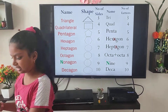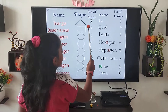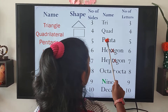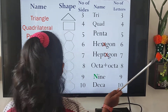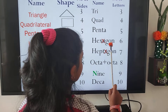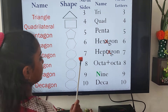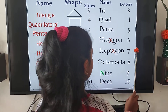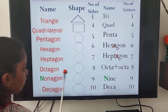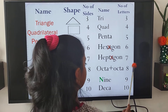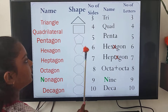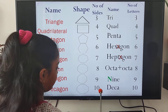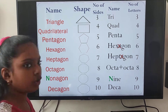Let us revise. Triangle has three sides — 'tri' means three. Quadrilateral has four sides — 'quad' means four. Pentagon has five sides — 'penta' means five. Hexagon has six sides — six letters. Heptagon has seven sides — seven letters. Octagon has eight sides — octa plus octa equals eight. Nonagon has nine sides — starts with N like nine. Decagon has ten sides — deca means decade.